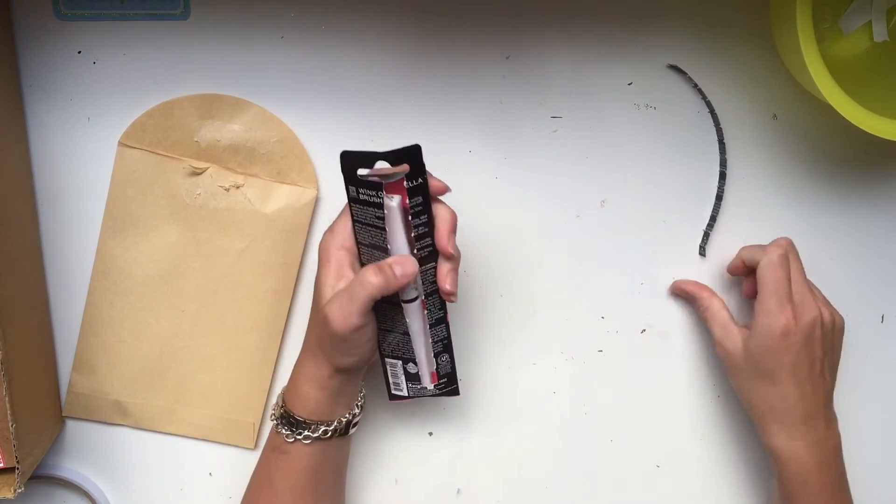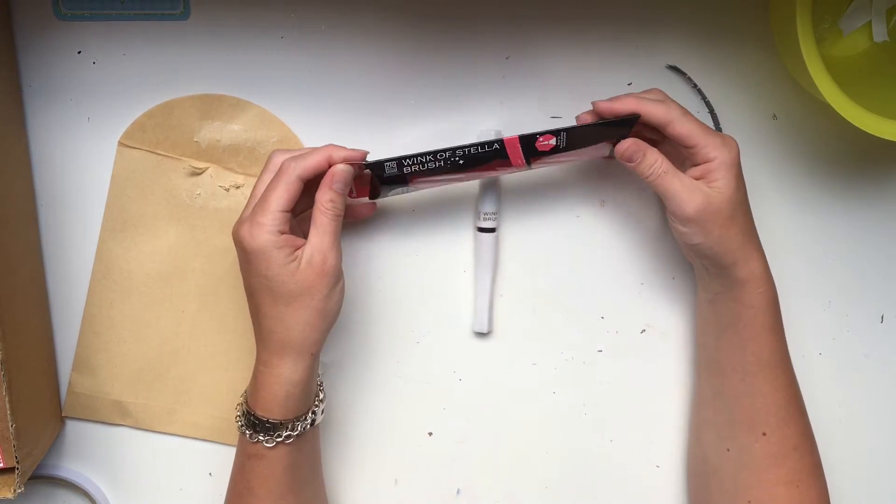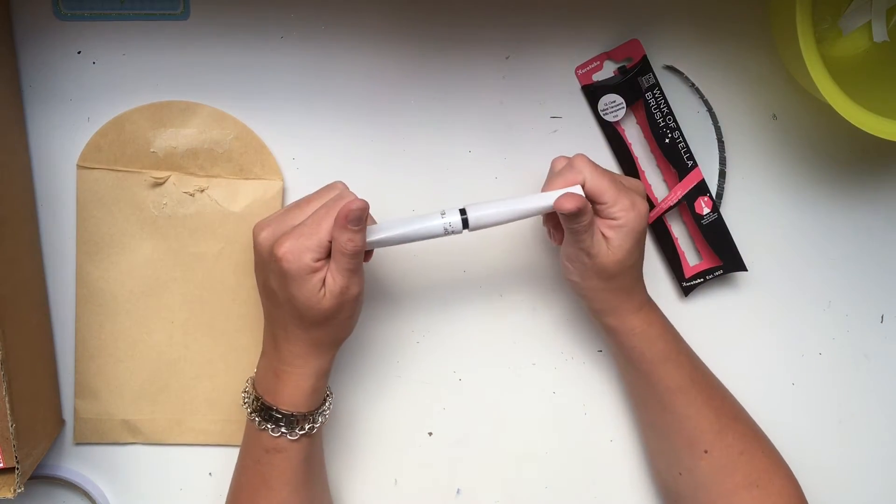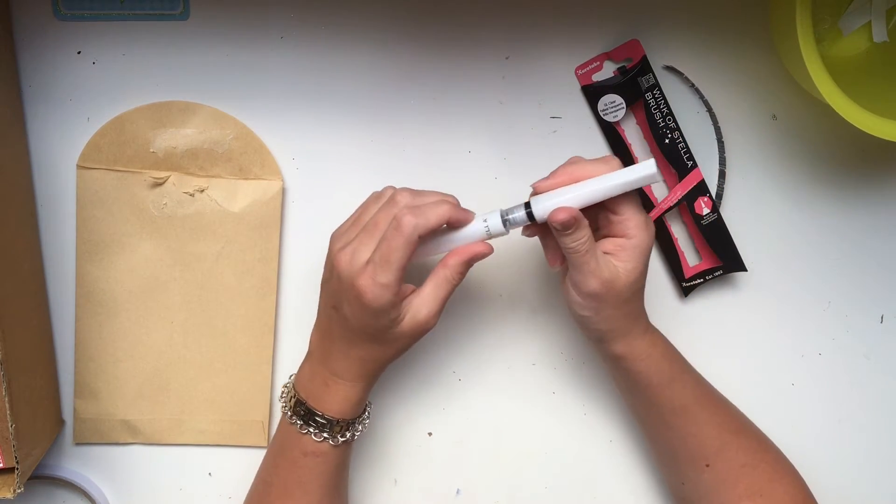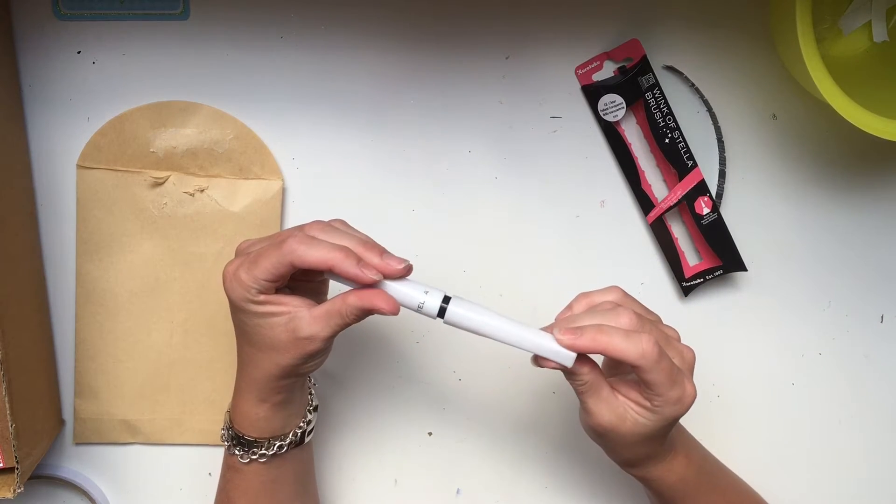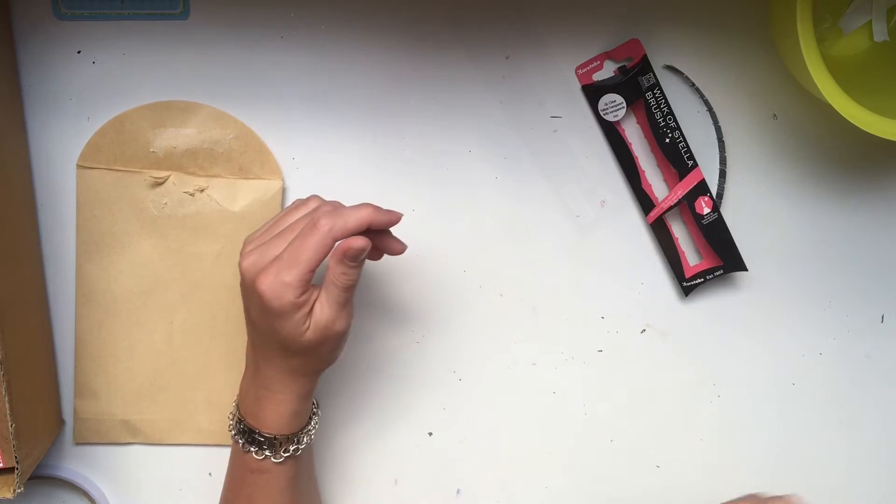Now, if any of you haven't heard of Wink of Stella, it's like a sparkly glitter pen. I'm pretty sure that brand or that particular one is from Stamping Up, but I'm not a hundred percent sure. Oh, so cool. I cannot wait to give this a try. Wow. Check it out. It's kind of like an aqua brush with the brush tip on it.